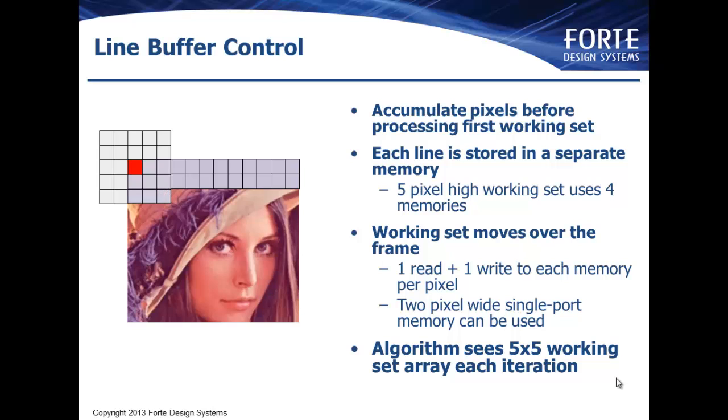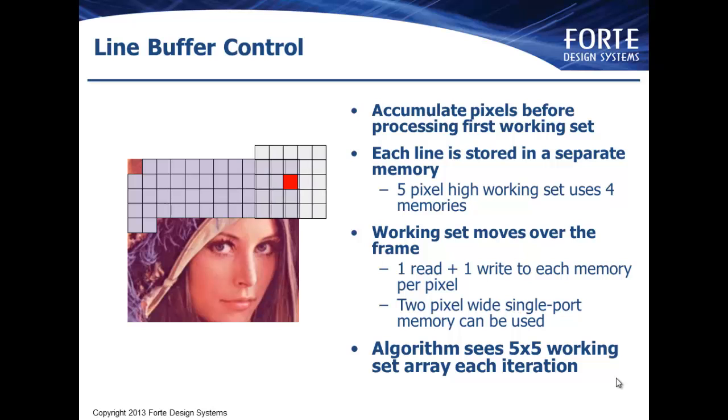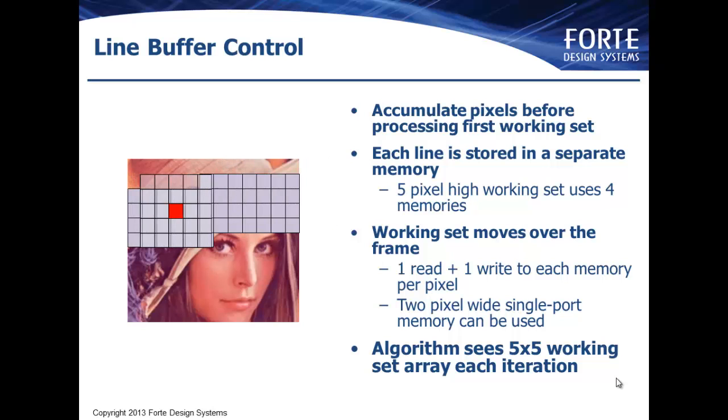Then the working set will move across the image and output pixels can be calculated. In our example, this requires that we store a maximum of four rows of the image at any time plus the storage for the working set. If the line buffer is well constructed, it will hide all the underlying details from the algorithm and just present a simple interface to the algorithm which will be the working set.